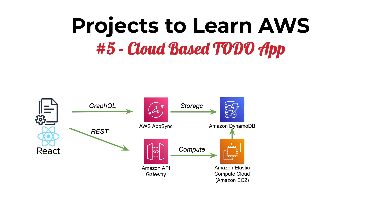This isn't all that useful unless we have some protection over the resources. If two different users are using this to-do app, we don't want them to see each other's to-dos, so we need authentication and authorization. For that there's Amazon Cognito, an authentication and authorization service that allows you to set up user pools. You can allow users to create accounts native to Amazon Cognito or integrate with social sign-on providers like Google, Facebook, and many more. I have multiple videos where I've created many of these applications, so I'll leave links in the comments below.